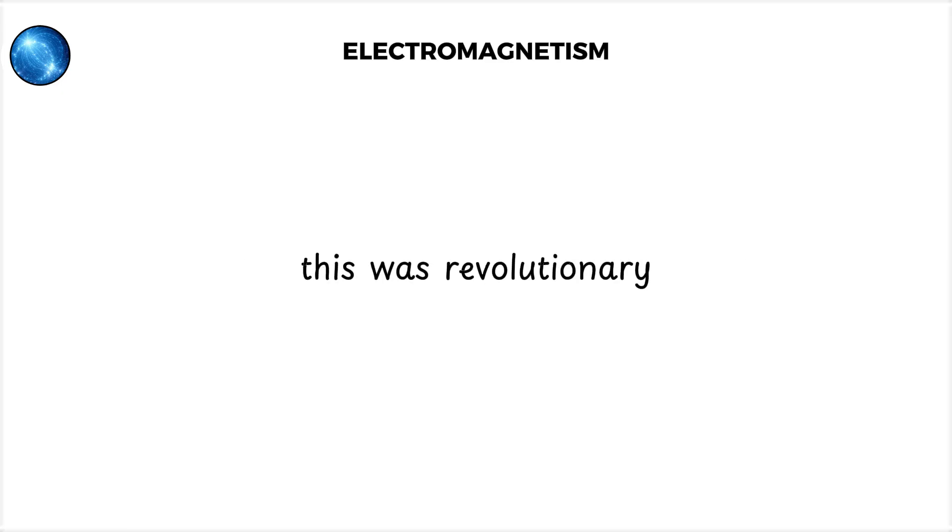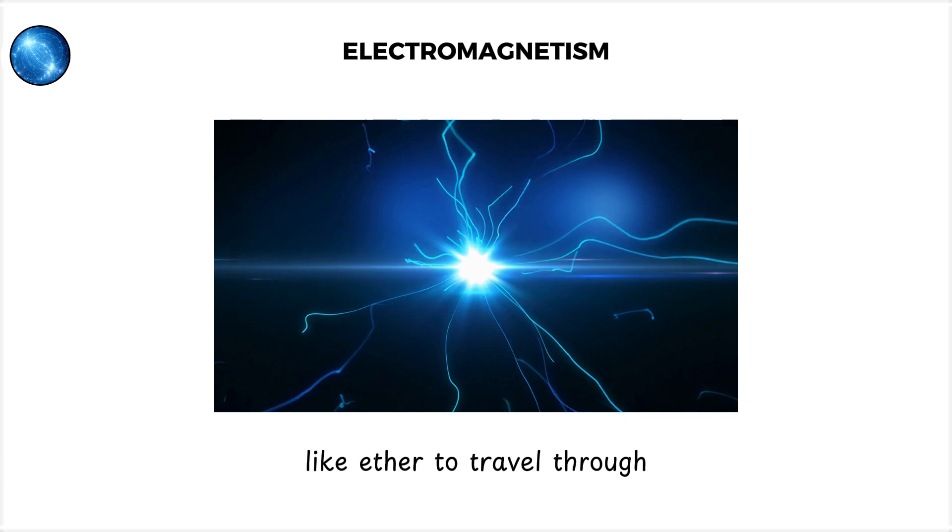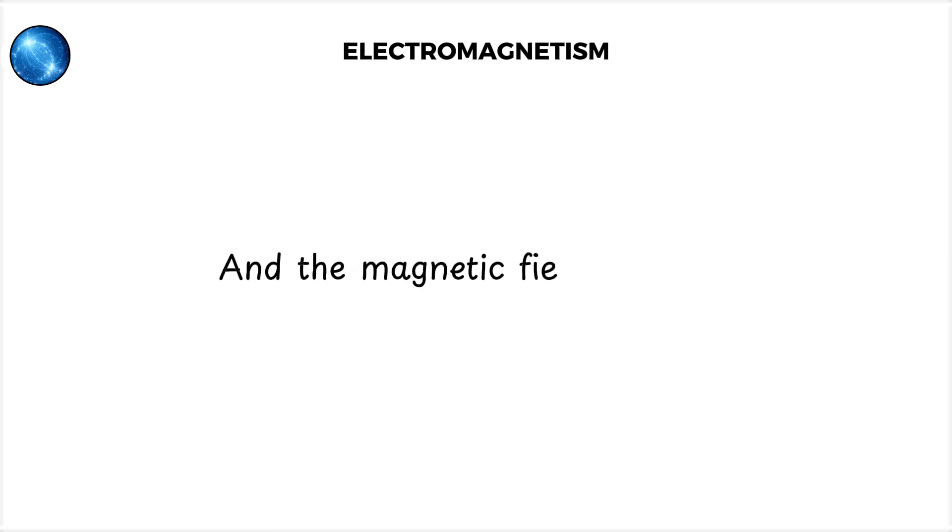This was revolutionary. It meant that light didn't need a medium like ether to travel through. It could propagate through the vacuum of space. Maxwell's theory explained phenomena as varied as radio waves, the glow of a light bulb, and the magnetic field of Earth.